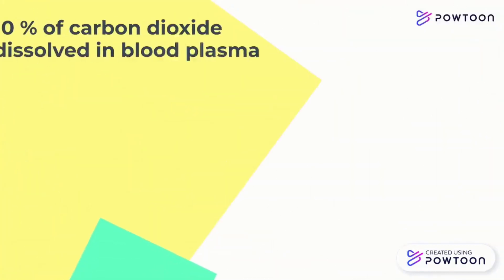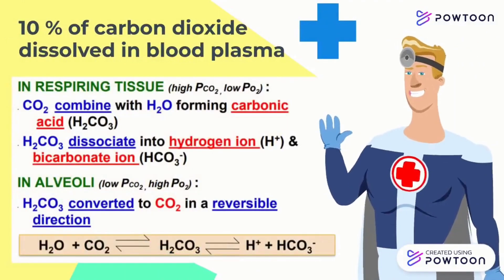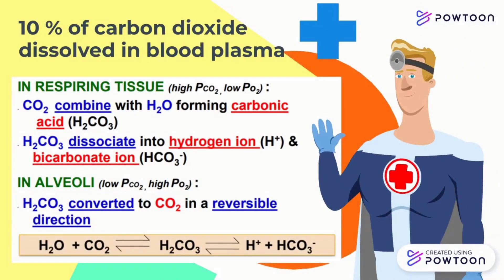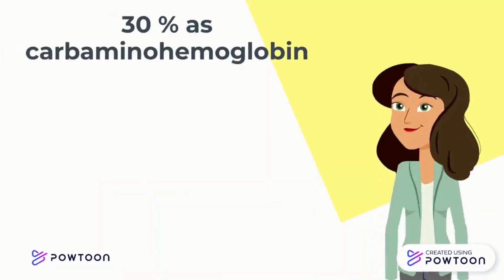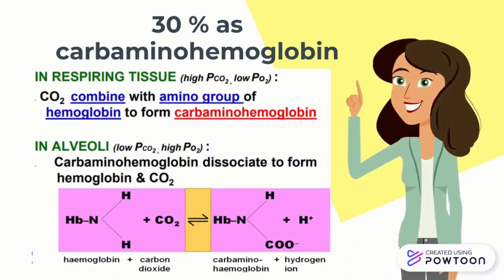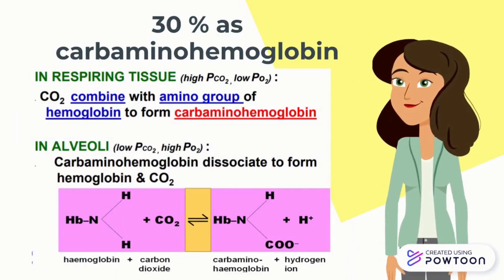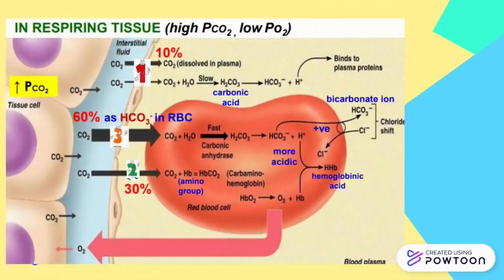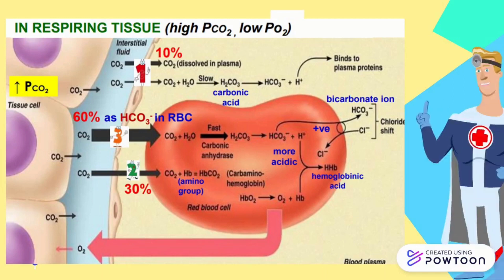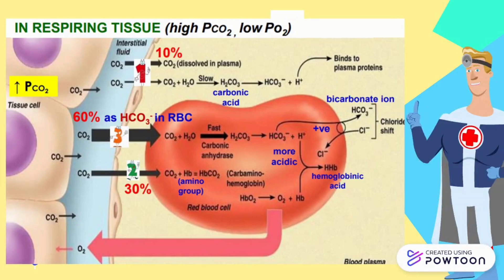For the 10% of carbon dioxide dissolved in blood plasma, I will explain about in respiring tissue and also in alveoli. I will also explain about the 30% as carbaminohemoglobin in the same slide. Firstly, the 10% of carbon dioxide will dissolve in blood plasma. Carbon dioxide can also go into plasma and combine with water to form H₂CO₃, that is carbonic acid. The H₂CO₃ will dissociate into hydrogen ion and bicarbonate ion. The reaction is slow because there is no enzyme, and it happens outside of the red blood cell.